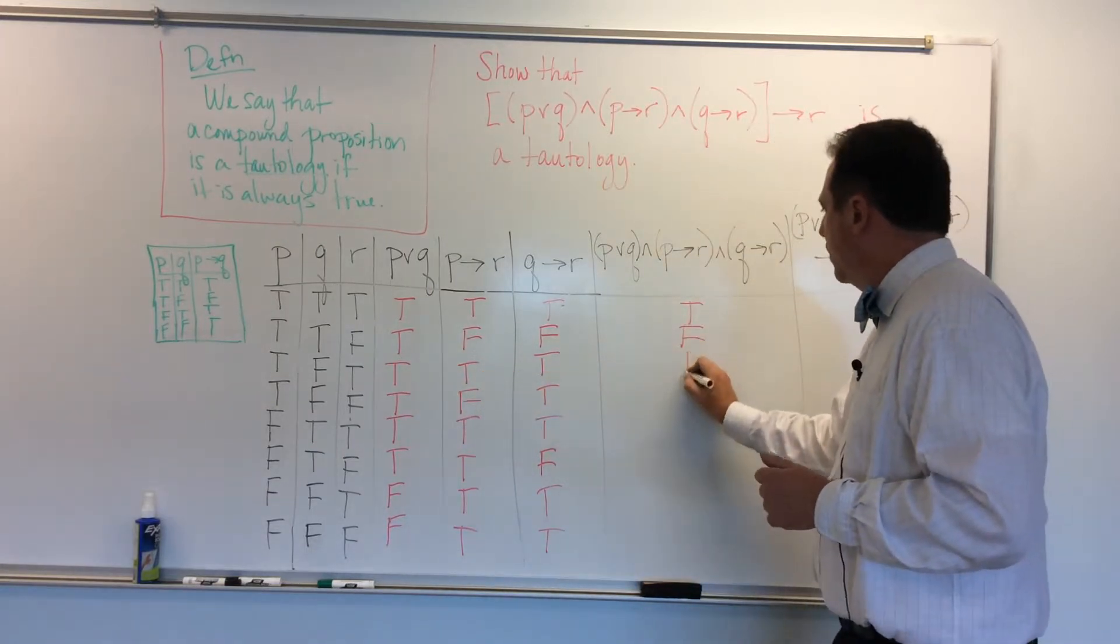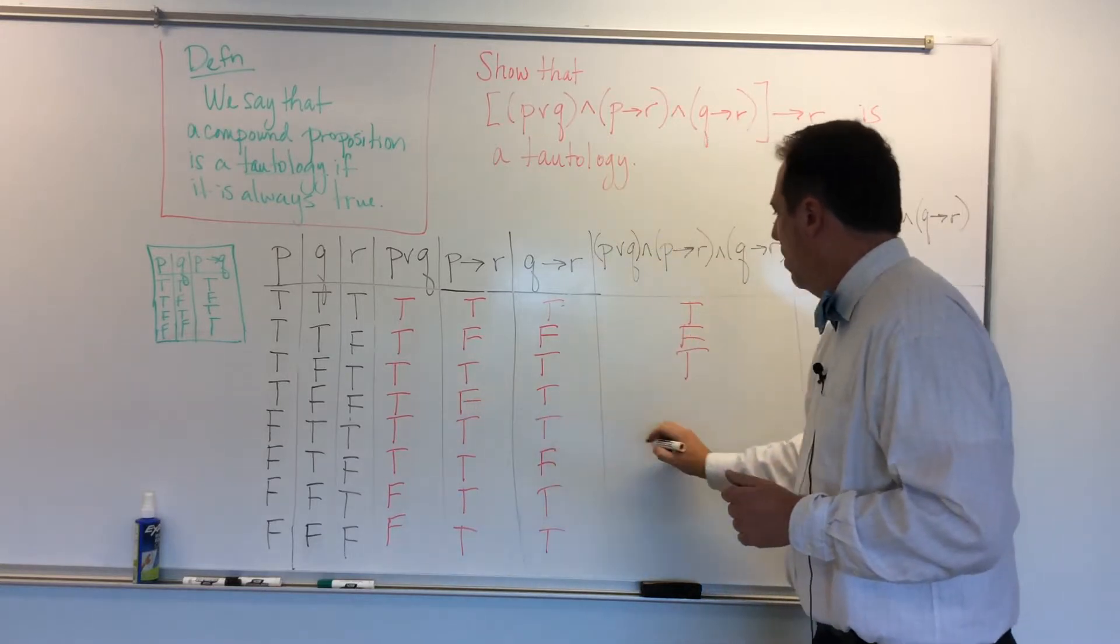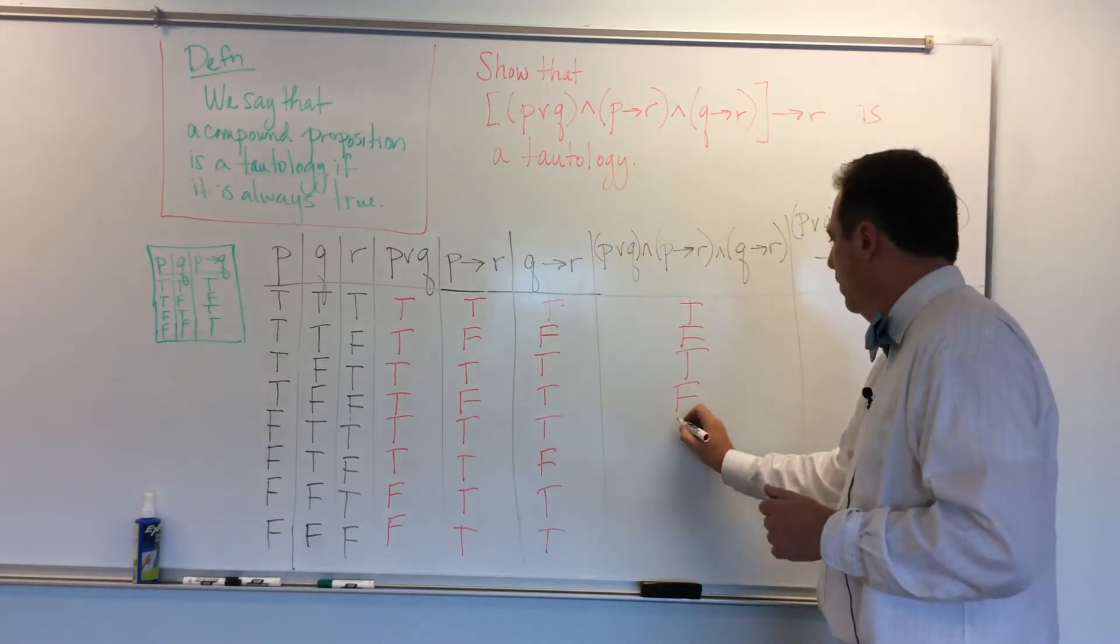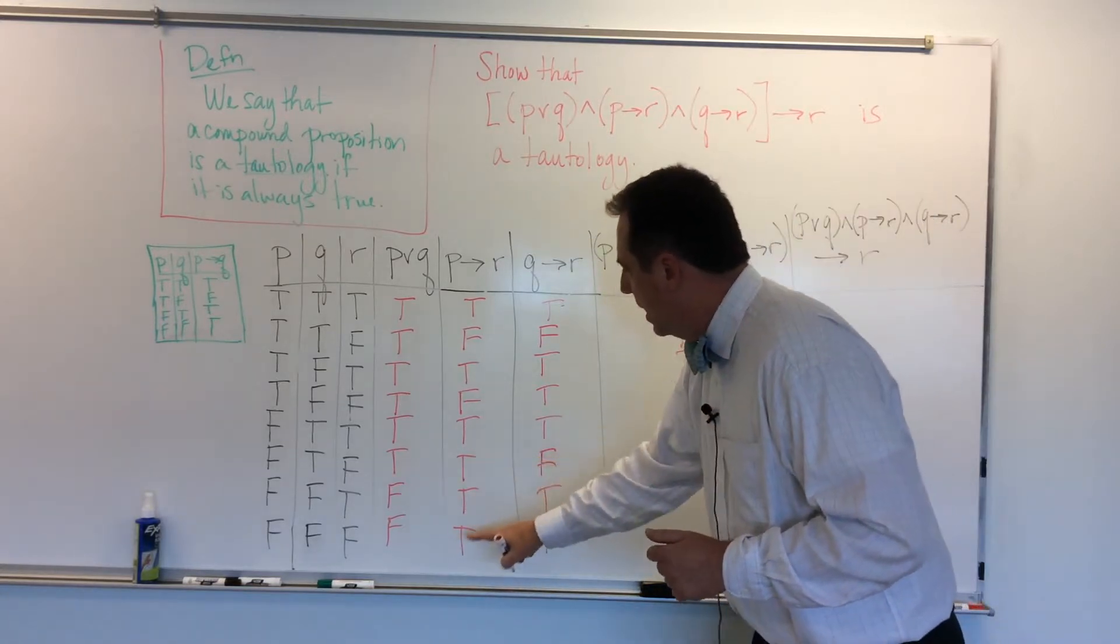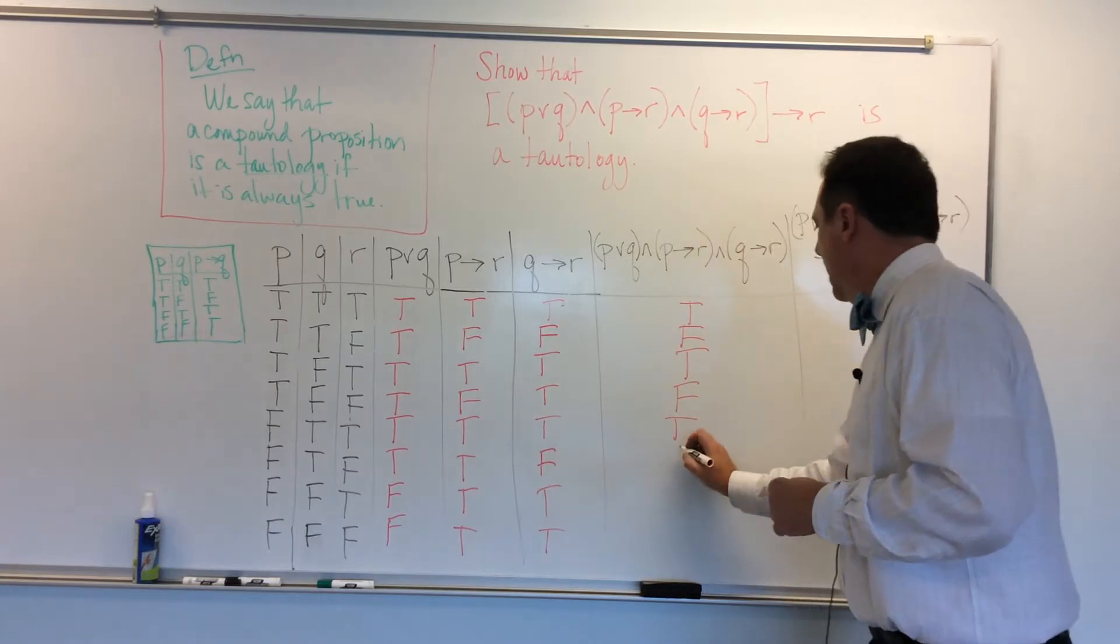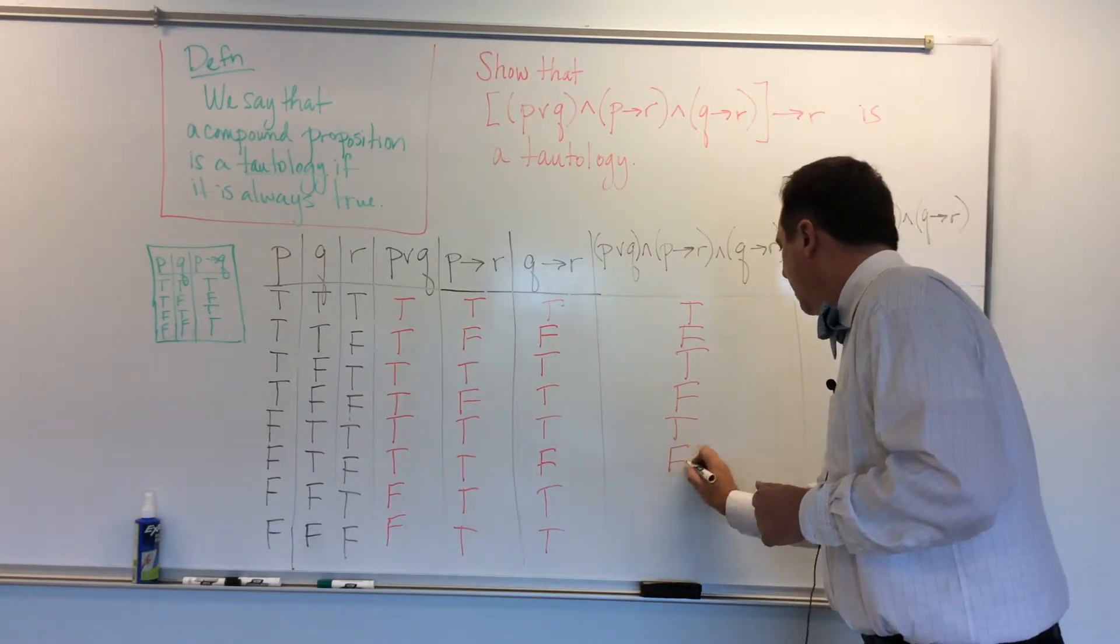And here, oh, three trues, that's true. Oh, there's a false, so that's got to be false. This is all true, so that's true. And the rest, the last three rows of these three columns have a false in there, so they've got to be false.